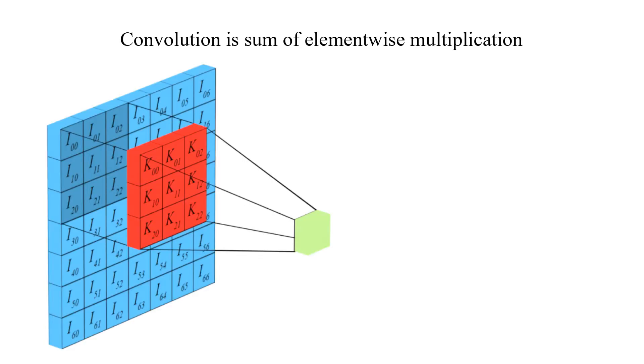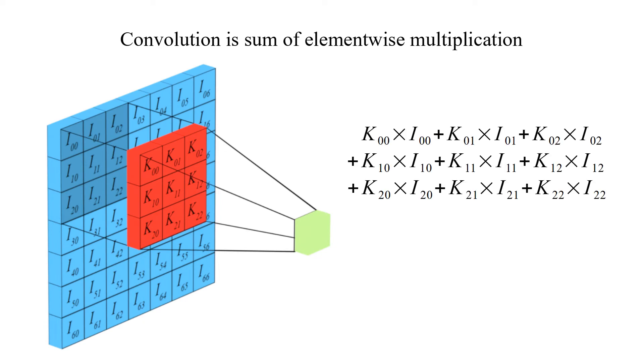Image and kernel are both matrices. Kernel is generally much smaller than image. Convolution is sum of elementwise multiplication. For a 3 by 3 kernel, nine multiplications and eight additions are needed.